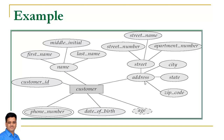Address is also a composite attribute, jisko street, city, state, aur zip code mein break kiya ja sakta hai. Jabki street further street number, street name, or apartment number mein break kiya ja sakta hai. Customer ka phone number multi-value attribute hai, meaning customer ke multiple phone numbers ho sakte hain. Customer ka ek date of birth attribute hai, jabki age attribute ek derived attribute hai, which indicates ki age ki value runtime pe calculate ki jayegi aur age ko store karne ki zarurat nahi hai.